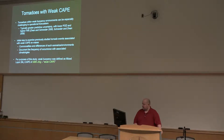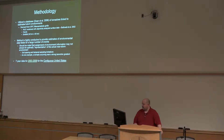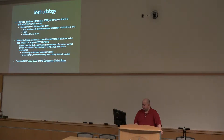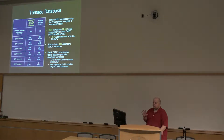We looked at some of the commonalities and differences of these scenarios. For purposes of this study, when I say weak CAPE, we define that as ML CAPE of 500 joules per kilogram or less. You're probably not chasing many Oklahoma cases in the spring where CAPE is less than 500 joules per kilogram. The database is the mesoanalysis data — gridded mesoanalysis information on a 40-kilometer grid — and we used a seven-year dataset covering the entire U.S., constrained to weak CAPE scenarios.